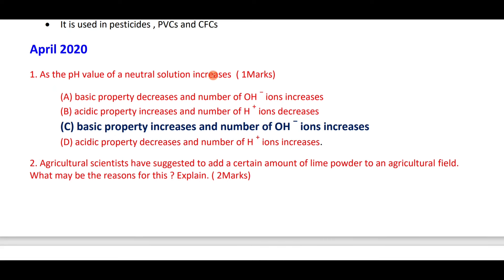If the pH of a neutral solution increases, that means basic property increases — above seven is basic, below seven is acidic. Therefore basic property increases and the number of OH⁻ ions increases.